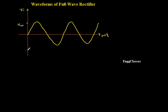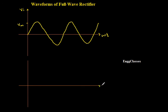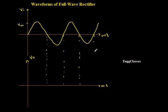Let me draw the output waveform with x-axis and y-axis, where x-axis is omega t and y-axis is the output waveform. We understood that during the positive half cycle of the input, diode d1 is going to conduct and I am going to get the output waveform because of diode d1. The amplitude is going to be vm if we consider an ideal diode.